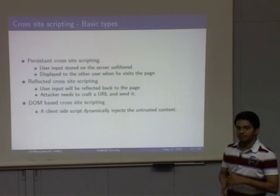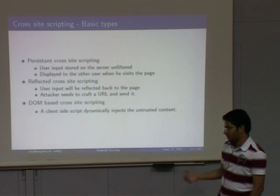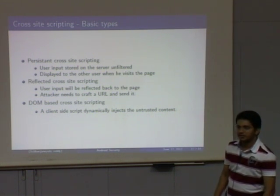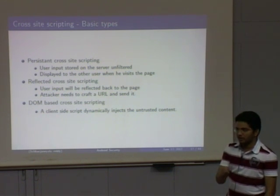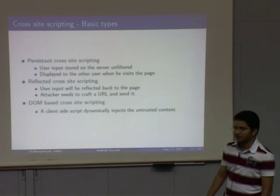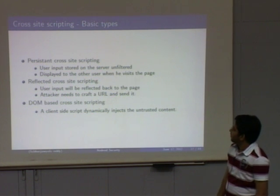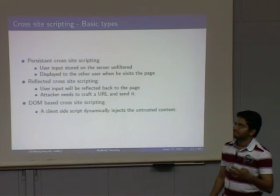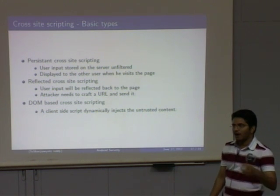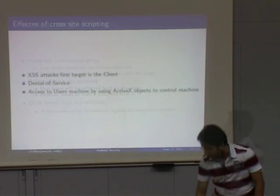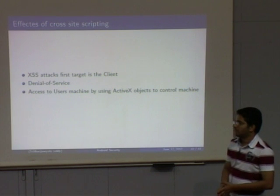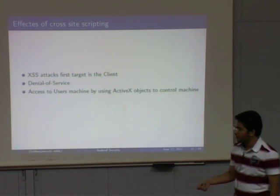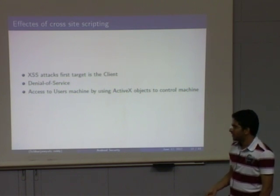In reflected XSS, the malicious code is not stored on the server. Just like a search result that reflects back — 'showing results for so and so' — if that input is not sanitized, there may be reflected cross-site scripting. DOM-based XSS is another type where the script runs on the client side itself and the malicious script is kept on the client side. Precautions for XSS can be done at the server side, client side, or both sides. Android web browsers need to implement precautions; otherwise, they are vulnerable to cross-site scripting.